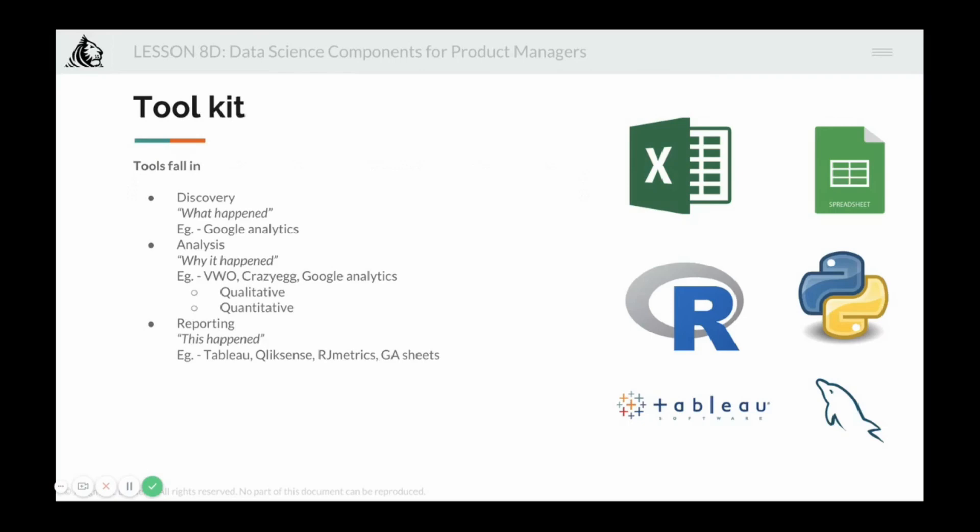Analysis is why it happened, which is where Visual Website Optimizer VWO, Crazy Egg, and Google Analytics to some degree help. Then there is reporting where you say this happened. What happened, why it happened, and finally this happened. For reporting, you will use Tableau, Qlik Sense, RG Metrics, or GA Sheets. Typically in reporting, you may also use Tableau for drawing insights.